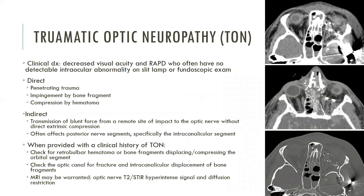Traumatic optic neuropathy is a clinical diagnosis made in orbital trauma patients who present with decreased visual acuity and a relative afferent pupillary defect, who often have no detectable intraocular abnormality on slit lamp or fundoscopic exam. The etiology may be classified as indirect or less commonly direct. Direct traumatic optic neuropathy is secondary to optic nerve injury from penetrating trauma, impingement from a displaced bone fragment, or compression by hematoma including optic nerve sheath hematoma. Indirect traumatic optic neuropathy results from transmission of blunt force to the optic nerve without extrinsic compression, most commonly affecting the intracanalicular segment. When provided with this clinical history, special attention should be paid to the orbital and intracanalicular segments of the optic nerve, checking for retrobulbar hematoma or bone fragments, and carefully evaluating the optic canal for fractures. MRI findings include hyperintense T2 signal and diffusion restriction within the affected optic nerve segment, though these must be correlated with clinical history as they are nonspecific.